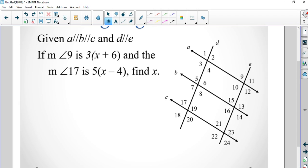I'm going to mark all these. We know all the obtuses are the same. Measure of angle 9 is right here, which is acute, and the measure of angle 17 which is right here, which is also acute. We know those are equal to each other. So we have 3 times x plus 6 equals 5 times x minus 4.